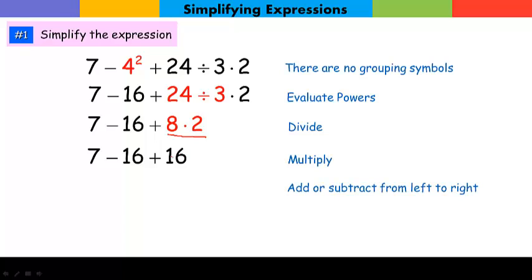Now I'm done with all my operations that include multiplication and division. Finally, it's adding or subtracting from left to right. You can just go straight across like that if you like. It's easy enough. 7 minus 16 is negative 9, and then negative 9 plus 16 is negative 7.